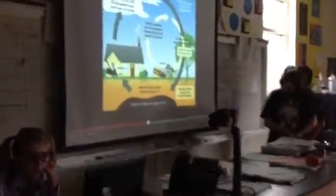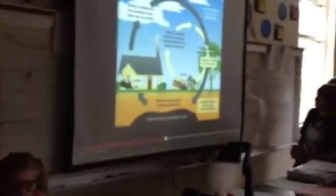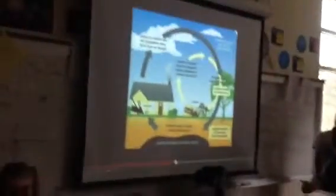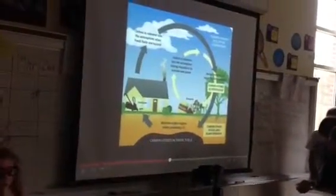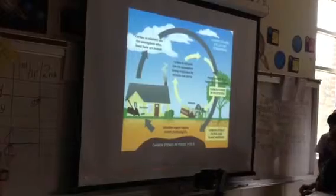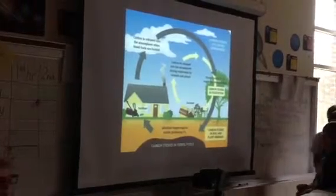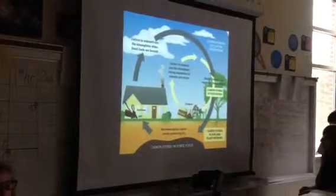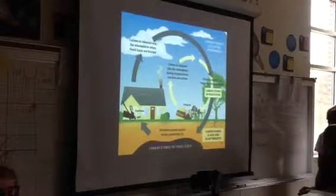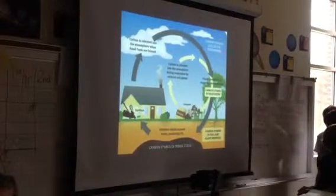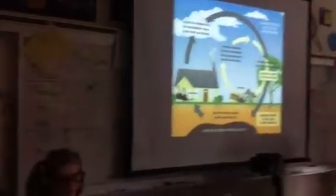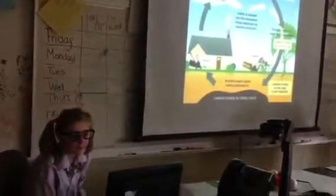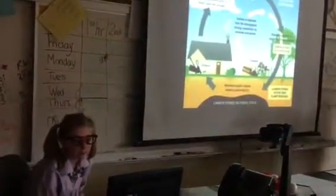Plants convert CO2 to sugars by photosynthesis, so they use CO2 to create their food, since they're producers. Carbon is released in the atmosphere during respiration by plants and animals.